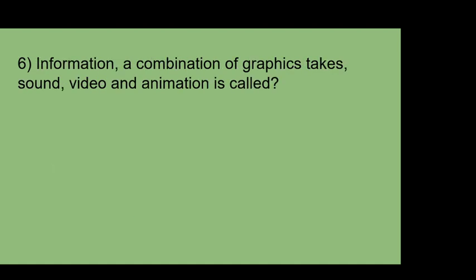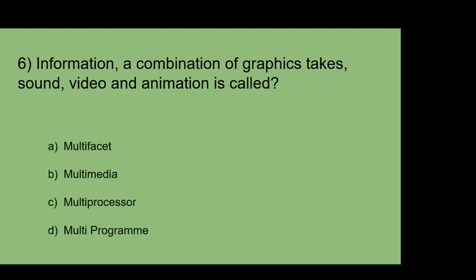A combination of graphics, text, sound, video and animation is called: A: Multifacet. B: Multimedia. C: Multiprocessor. D: Multiprogram. The answer is Multimedia.